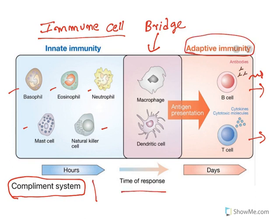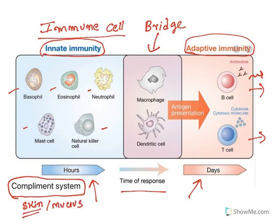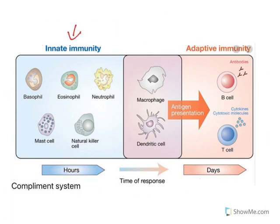Innate immunity acts within hours, while adaptive immunity takes days to start. Innate immunity begins with physical barriers like skin and mucous membranes — the first line of defense. When the skin is intact, infection cannot enter; when the skin is ruptured, infection can occur. Once these barriers are breached, innate immunity kicks in first, and if infection is chronic, adaptive immunity starts showing its action.